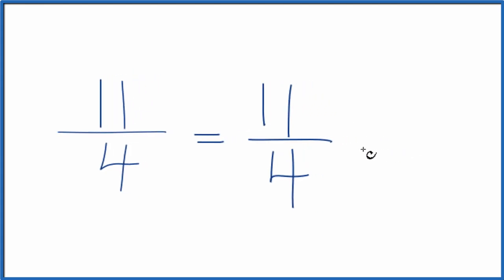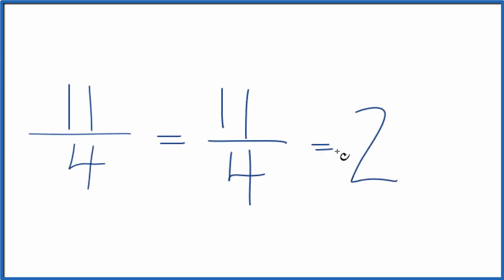4 goes into 11 2 times with 3 left over. And we bring the 4 across. So 11 fourths equals 2 and 3 fourths. We can check that. 2 times 4 is 8. 8 plus 3, that's the 11 here. Then the 4, we just keep that the same.